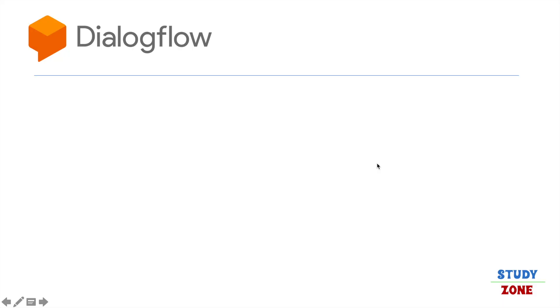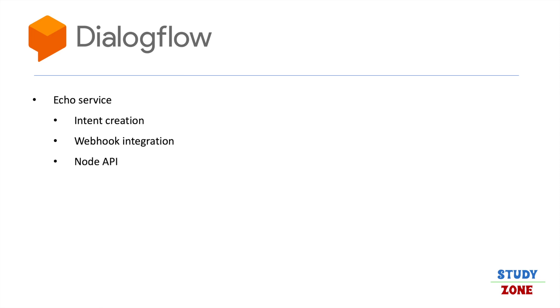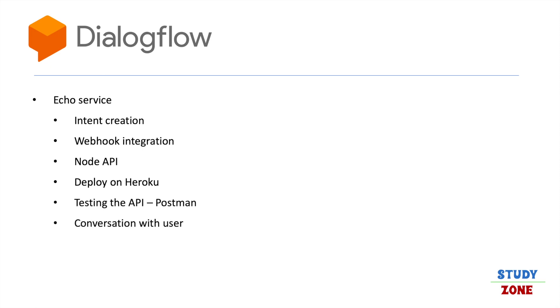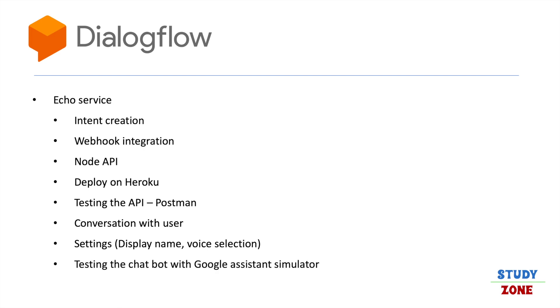We are going to make a chatbot — or you can say a Google Action — using Dialogflow, Node.js, and using Node.js as a webhook. Let us quickly have a look at what we will cover in this tutorial: creating the echo service, learning to create intents, integration of an intent with a webhook (a Node API), deploying an API on Heroku, and testing it using Postman. We will also learn about two-way conversation with the bot and how to change basic settings.